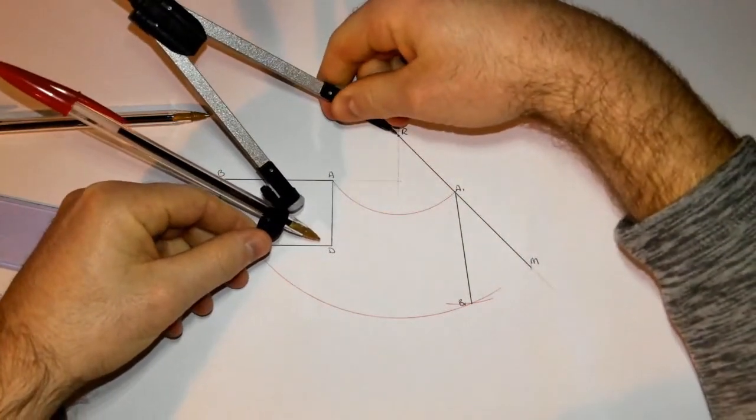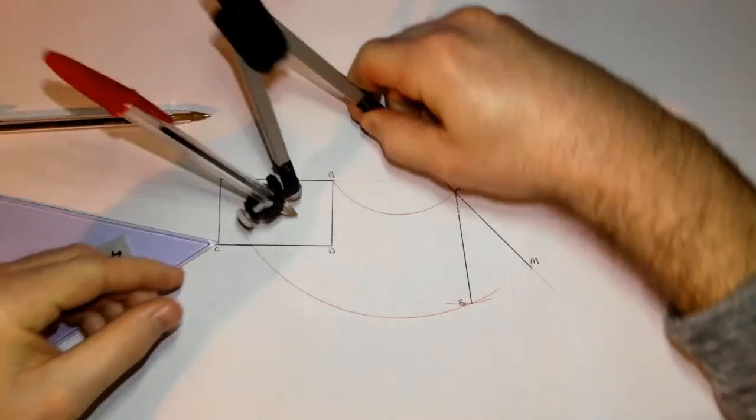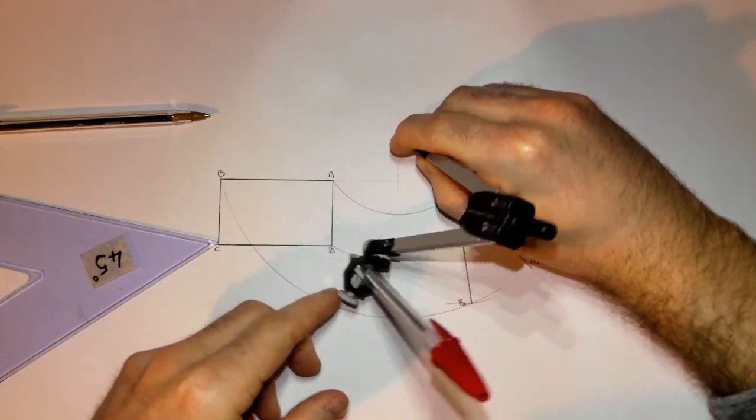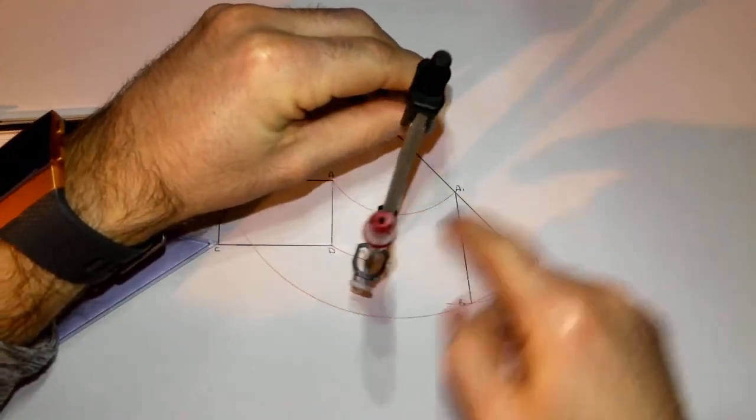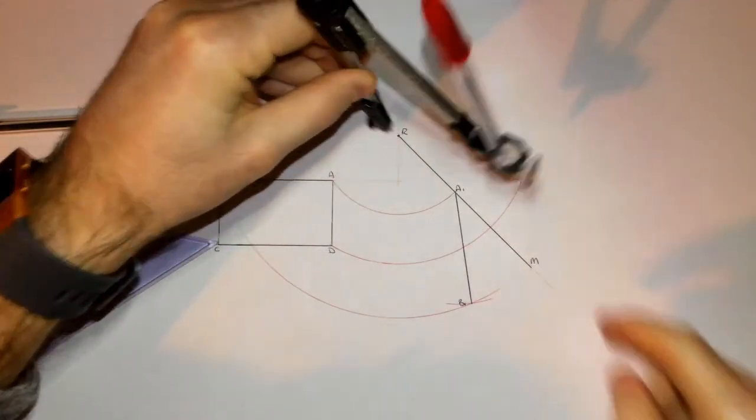So take the distance from R to D, that distance there, swing an arc. And you have to imagine D is going to be somewhere out here. It's going to be somewhere there possibly.